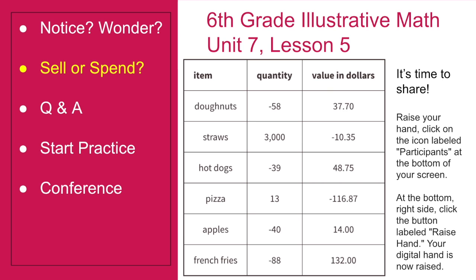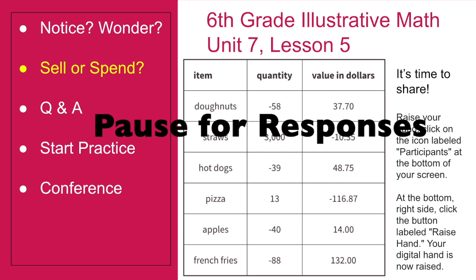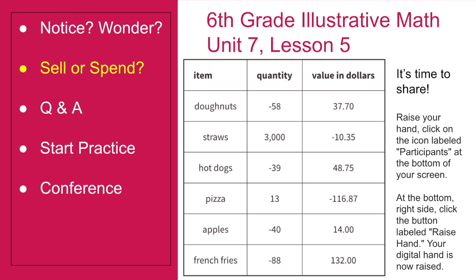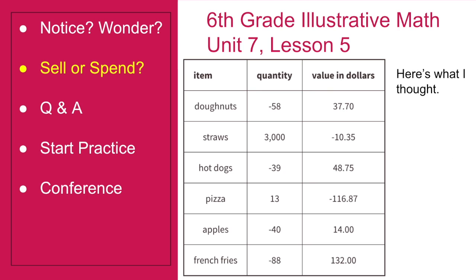Your digital hand is now raised. This is where I pause, look for raised hands, and call on students to share. I unmute that student, let them share, and then mute them again after they share. I call on another student and repeat the process if necessary. Here's what I thought: I think 58 donuts were sold, earning $37.70. I will continue until done with this slide.